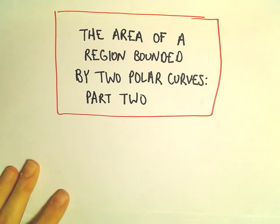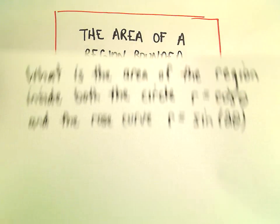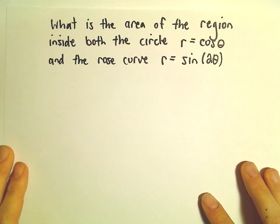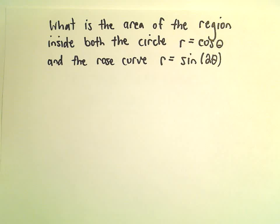We're going to do another example of finding the area of a region bounded by two polar curves. We're going to find the area that's inside both the circle r equals cosine theta and the rose curve r equals sine 2 theta.